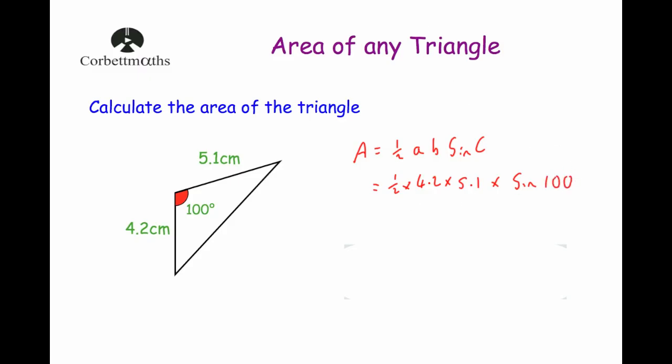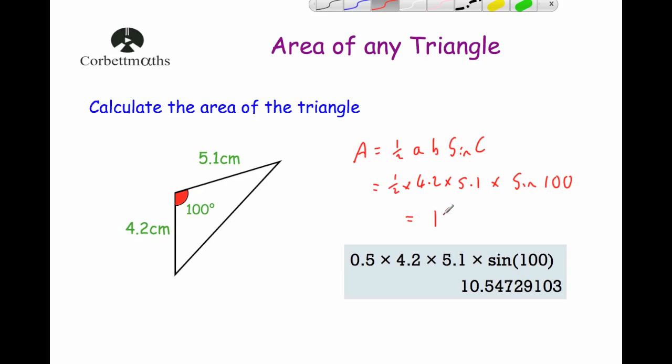When we do that we can type it into our calculator: 0.5 times 4.2 times 5.1 times Sin100. When we press equals we get an answer of 10.54729103. Now you might in the question want to round it to a suitable number of decimal places, so if I was doing this question I might write down 10.55 centimeters squared to two decimal places.